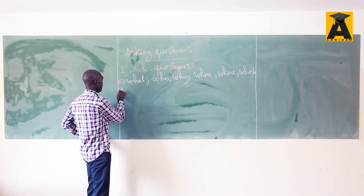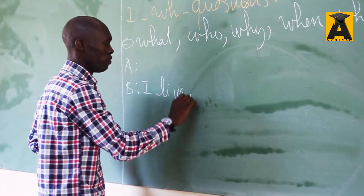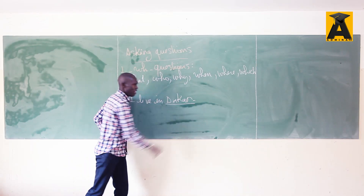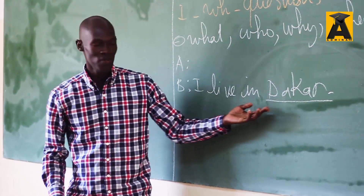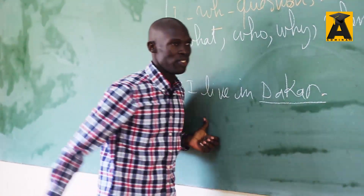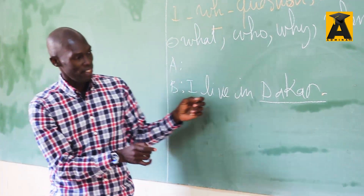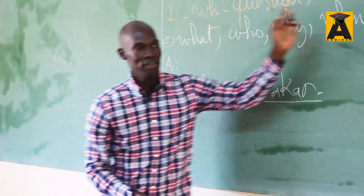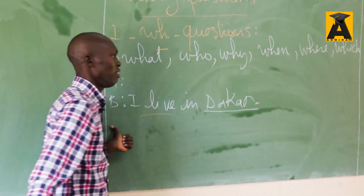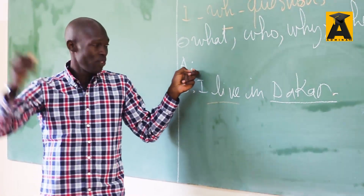So I give you this kind of dialogue between A and B. When you have: B says 'I live in Dakar' — and I underline the word Dakar — I ask you to ask a question whose answer will be the underlined word. You need to find the question word and then form the question depending on the answer you have here. 'I live in Dakar' — this is a simple present tense.